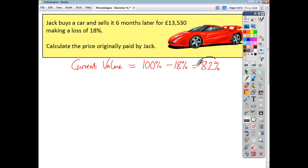So this selling price is 82% of what Jack paid for it. So let's write that down. 82% is equal to £13,530.